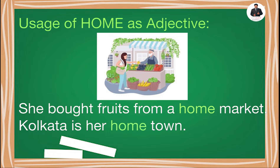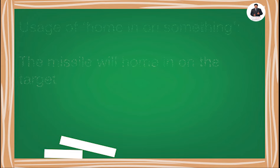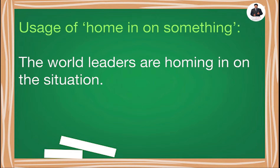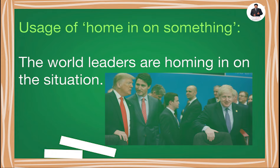Now the usage of home in a phrasal verb: 'home in on something' means to aim at something and move straight towards it. Examples: 'The missile will home in on the target.' 'The world leaders are homing in on the situation.'